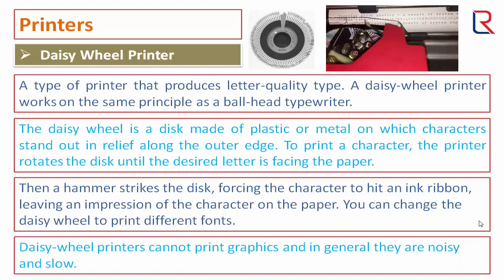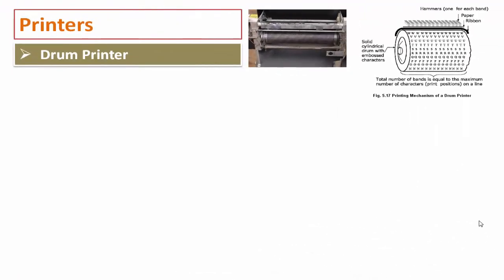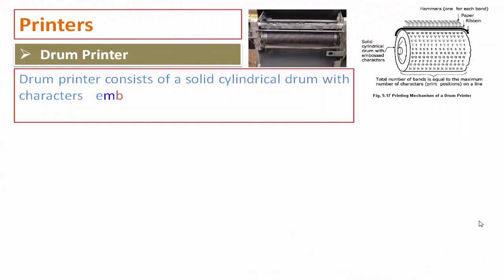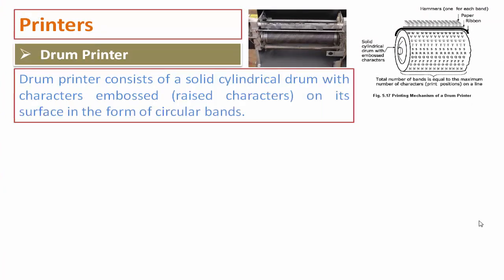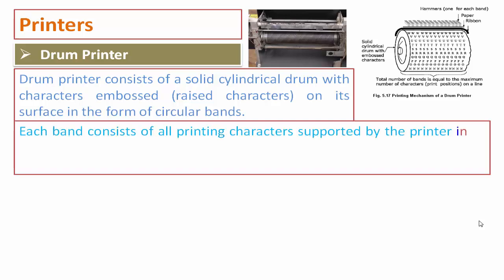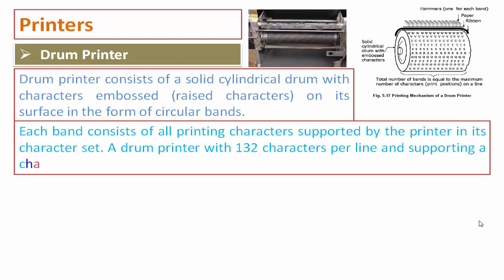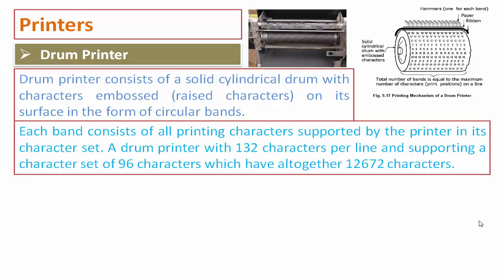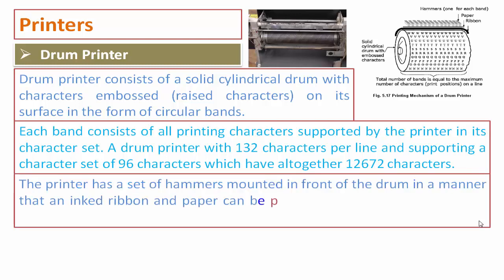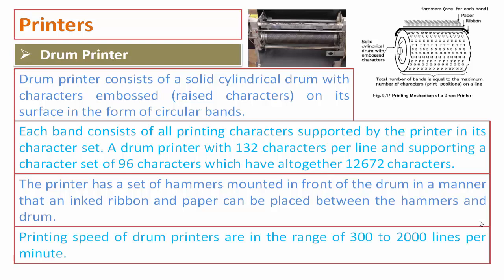A drum printer consists of a solid cylindrical drum with characters embossed on its surface in the form of circular bands. Each band consists of all printing characters supported by the printer's character set. For example, a drum printer with 132 characters per line and a character set of 96 characters has 12,672 characters in total. The printer has a set of hammers mounted in front of the drum so that an inked ribbon and paper can be placed between the hammers and drum. Printing speed of drum printers ranges from 300 to 2,000 lines per minute.